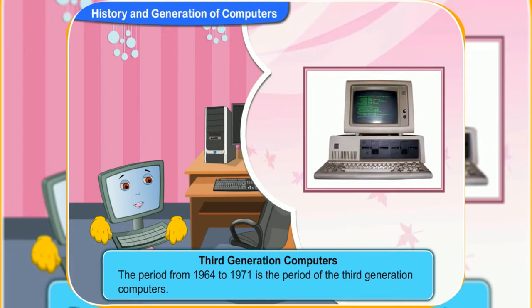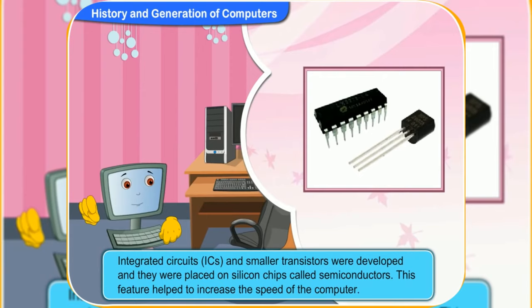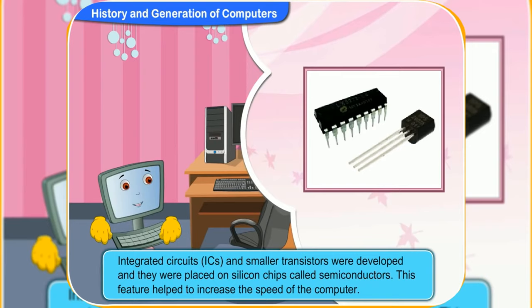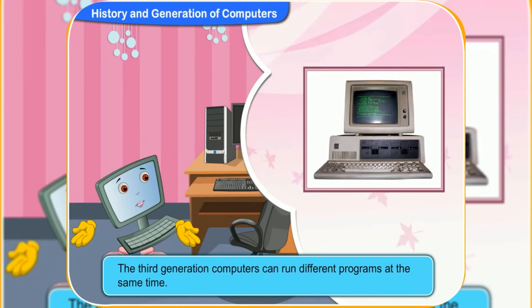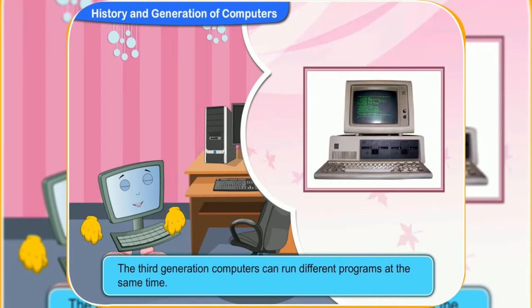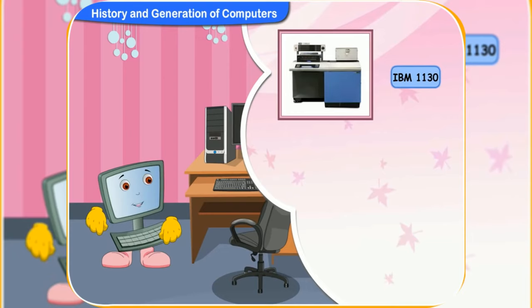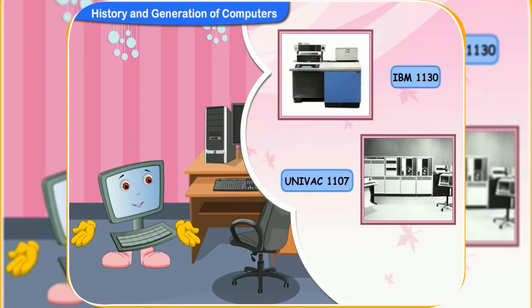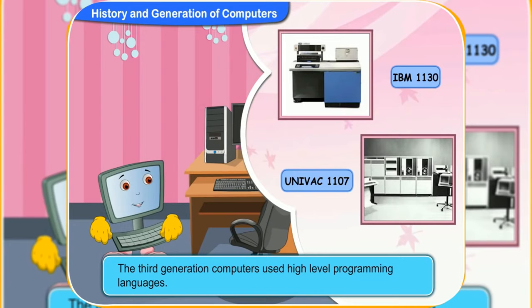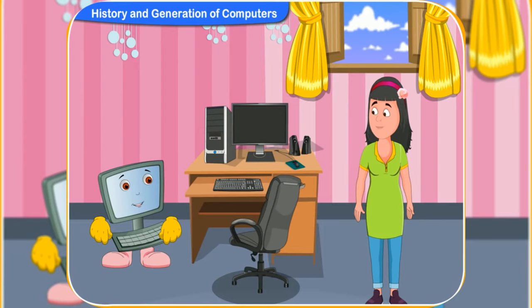The period from 1964 to 1971 is the period of the third-generation computers. During this period, integrated circuits and smaller transistors were developed and placed on silicon chips called semiconductors. These features helped to increase the speed of the computer. Third-generation computers could run different programs at the same time, and the common man could now use computers. IBM 1130 and UNIVAC 1107 are examples. These computers used high-level programming languages.